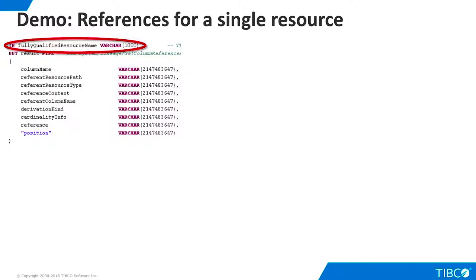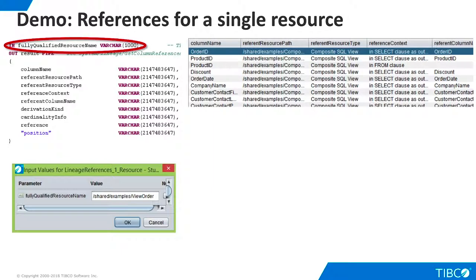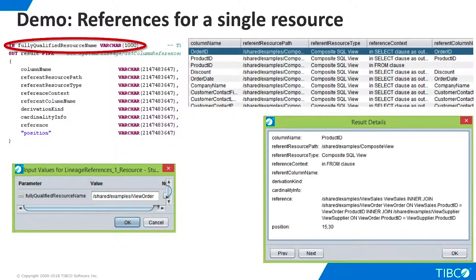Our single resource script for references is similar to that for dependencies. TDV's dependencies procedure is a bit simpler, so we only need to supply the name of the resource we want to analyze. At runtime, we enter the name of a view. Our result set is returned with one row for each column in the view. We can drill down on details for any row.